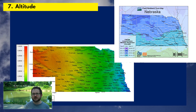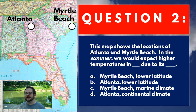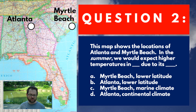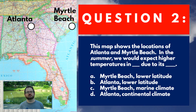Before moving to the third part of the lecture on climate classification, here's one more question. I have a map showing Atlanta, Georgia and Myrtle Beach on the coast of South Carolina. In the summer, which city would you expect to have higher temperatures, and due to which climate control? Look at your four choices and use the links below this video to answer the question — I'll give you some feedback before we move on to the third part of the lecture.